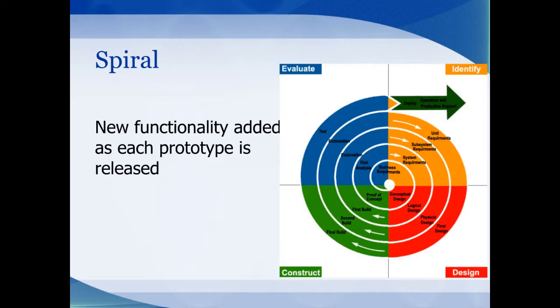The spiral model is just a modification of the waterfall model, only it goes through the model several times. There's an evaluation period until the next prototype is released and then it continues on into the cycle.